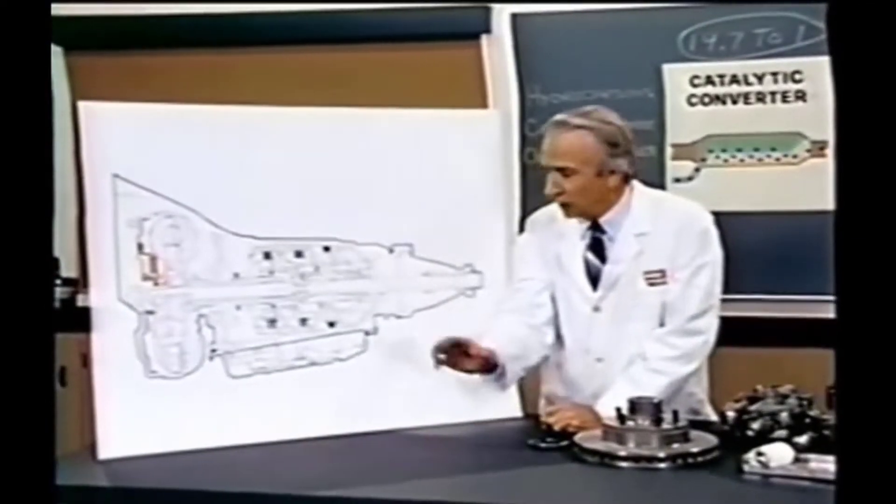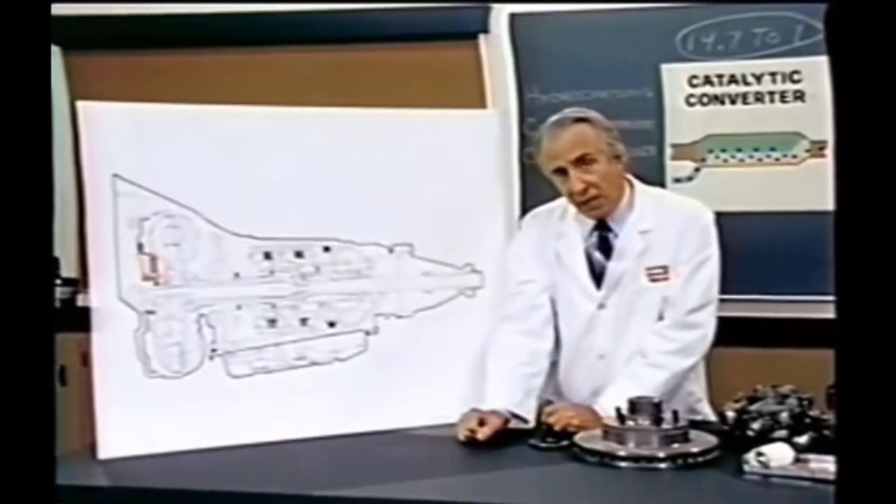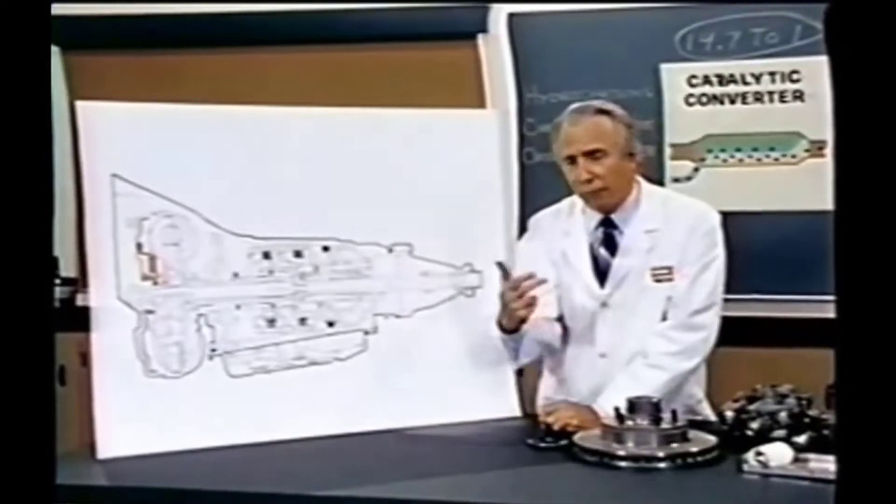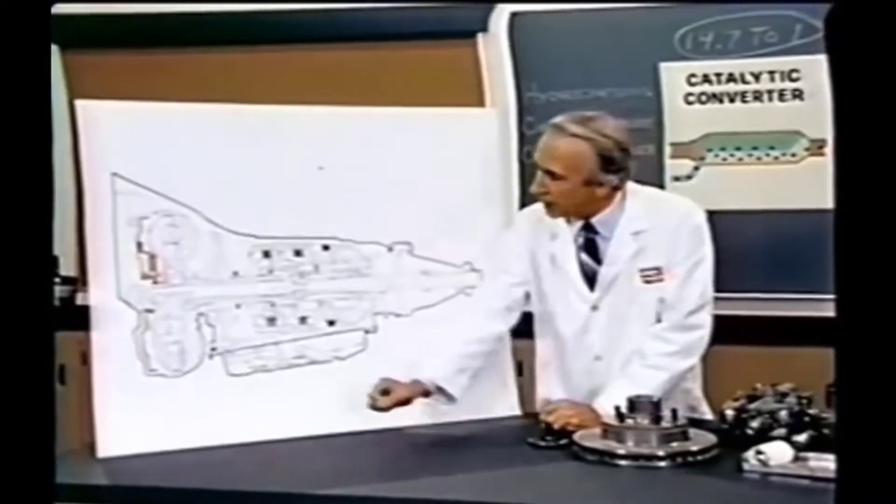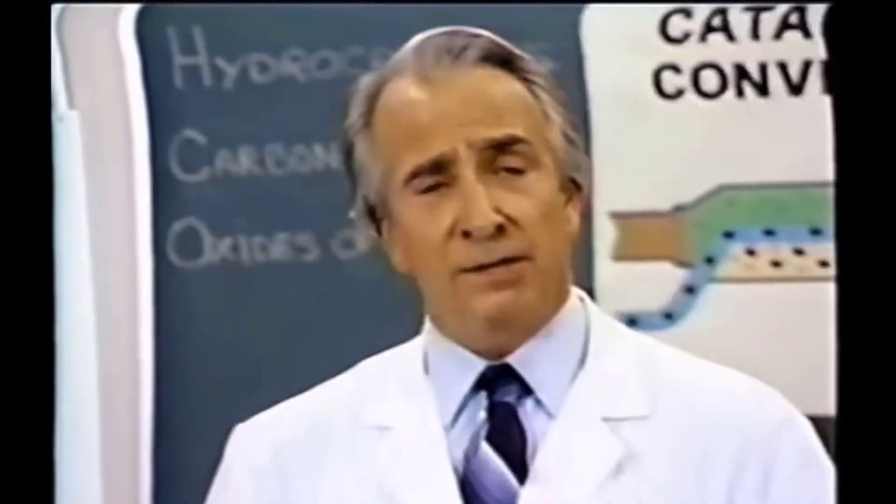The main winding was of the normal lotus or delta type, placed in panendermic semi-boloid slots of the stator, every seventh conductor being connected by a non-reversible tremie pipe to the differential girdle spring on the up-end of the grammys. The turbo encabulator has now reached a high level of development and is being successfully used in the operation of nopertrunnions. Moreover, whenever a fluorescent score motion is required, it may also be employed in conjunction with a drawn reciprocation dingle arm to reduce sinusoidal repleneration. It's not cheap, but I'm sure the government will buy it.